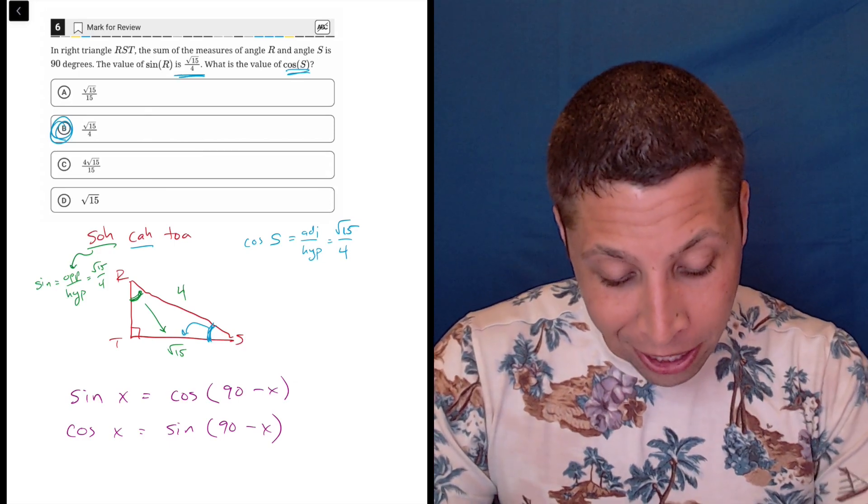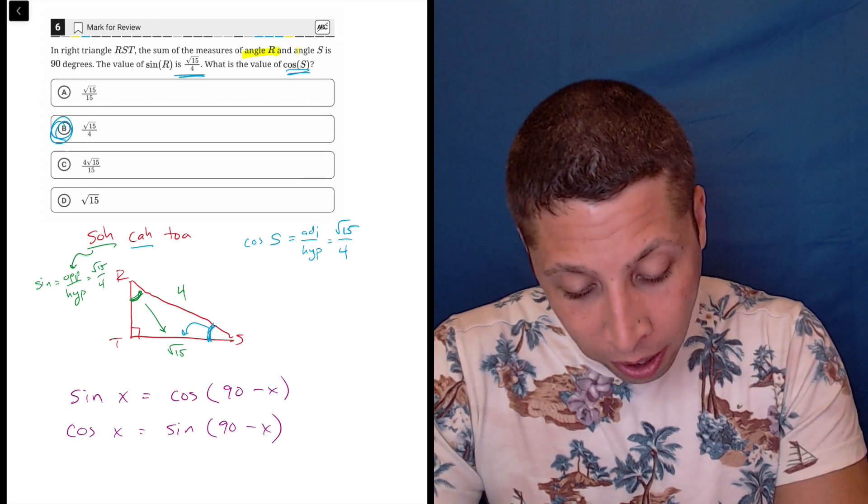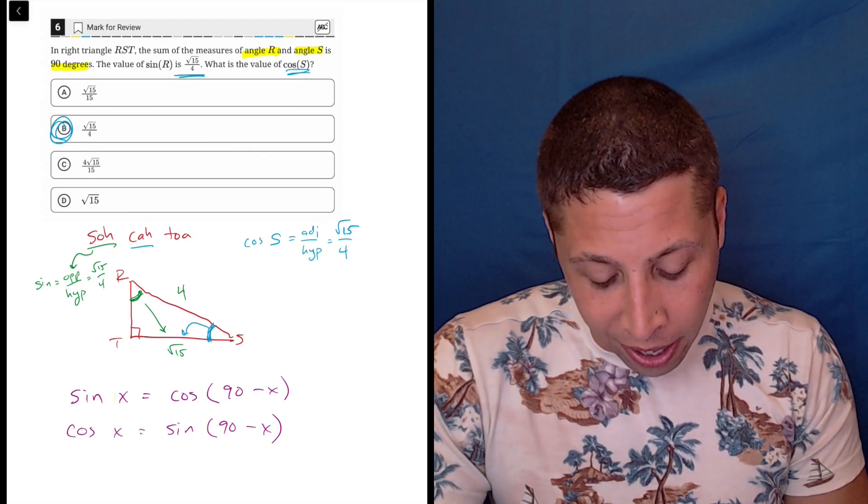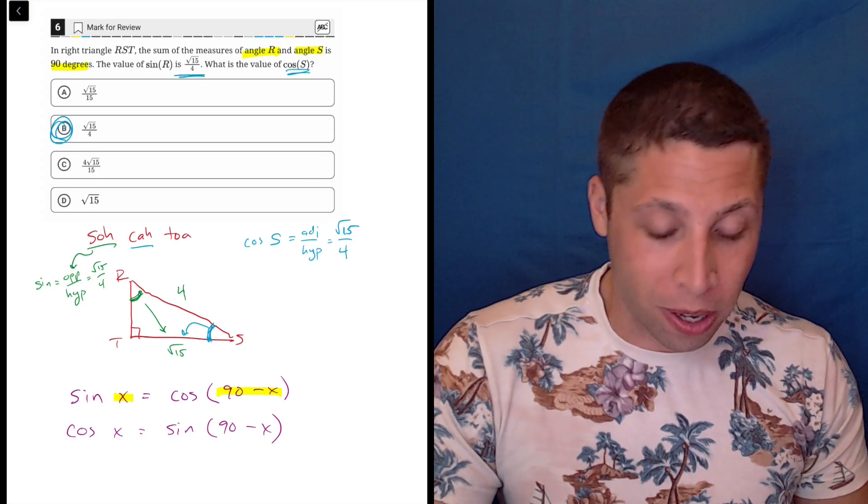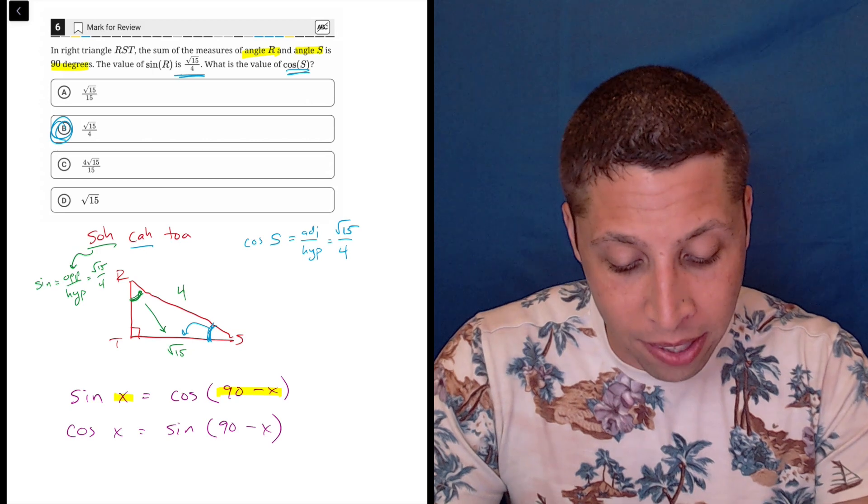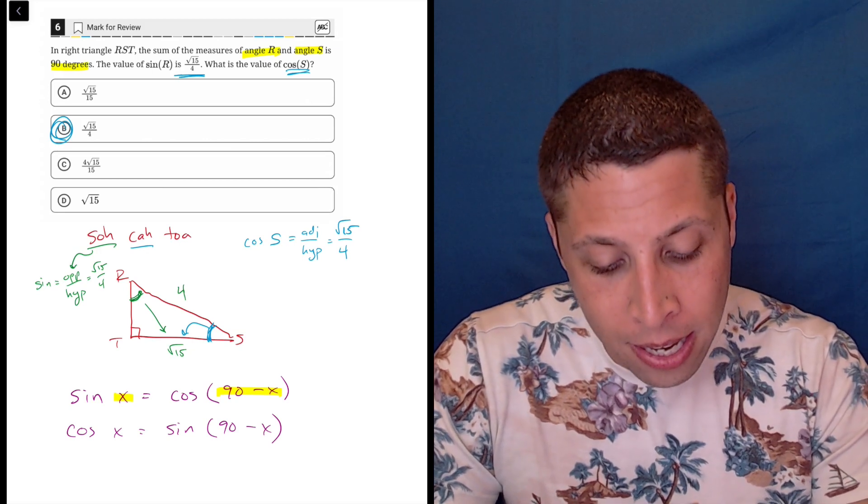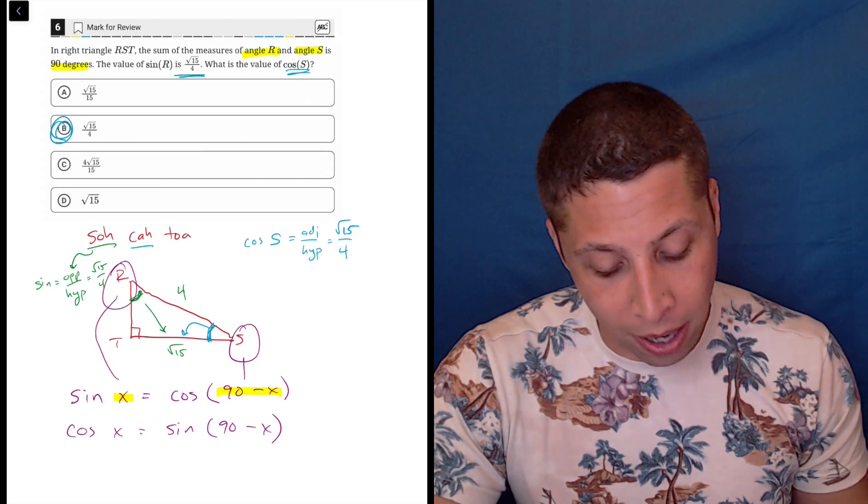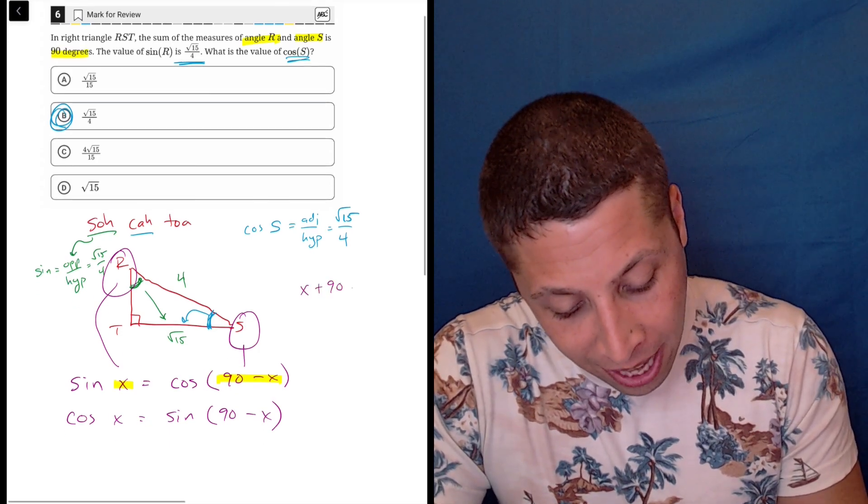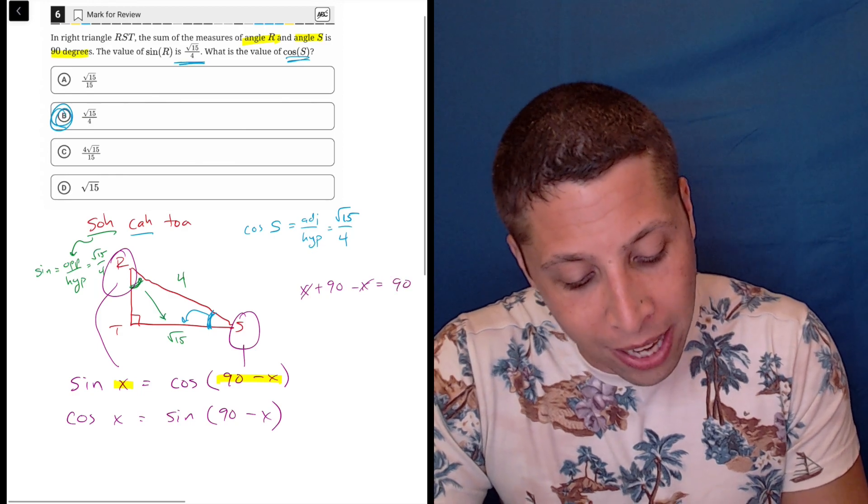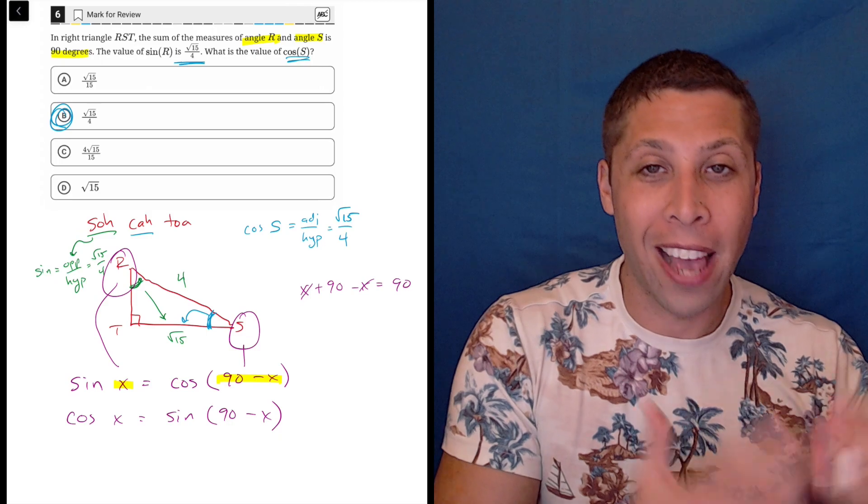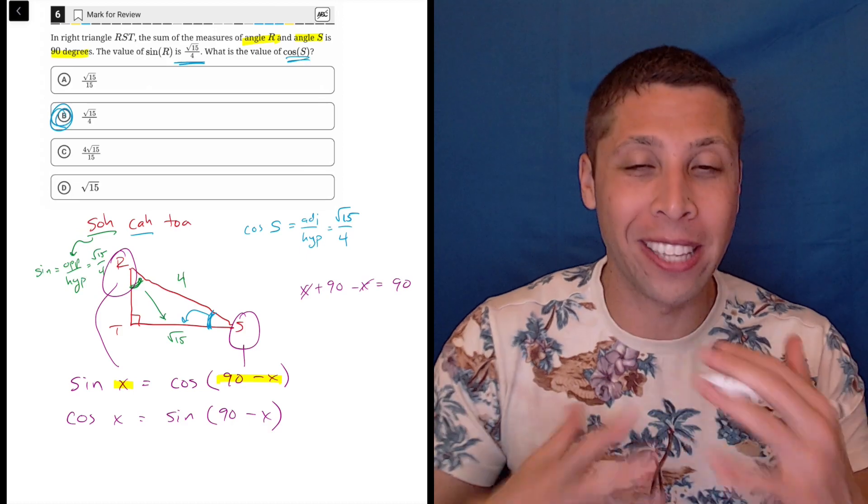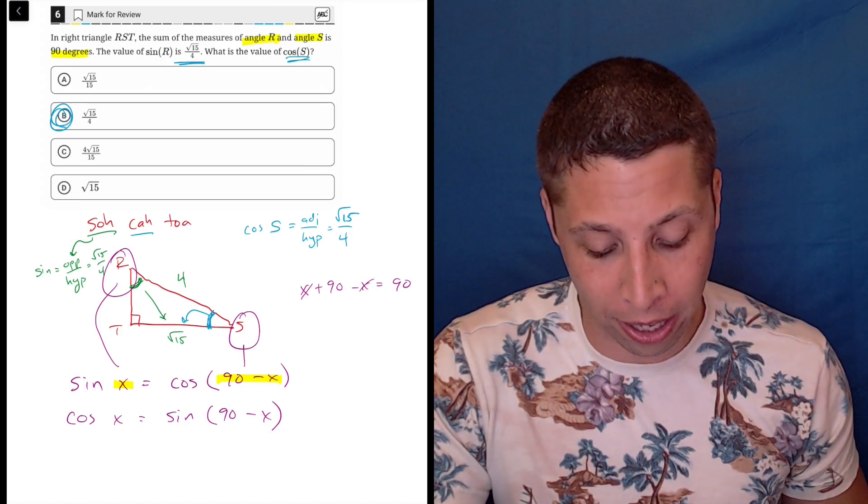Because if we kind of go by what they're even saying in the question, they're telling us angle R and angle S add to 90. Now let's pretend that the x is, let's say, R. The 90 minus x would be the other one. So basically, x and 90 minus x, the way this is set up, are always the two acute angles in the triangle. So if we said this was S, it's because this is R. To put it another way, x plus 90 minus x is always going to be 90 because that's the sum of the other two angles in the triangle. Because if it's a right triangle, the other angle is always right. It's always 90. So it's kind of just a way of understanding the basic principles of a right triangle.